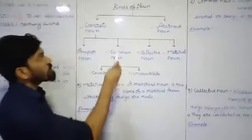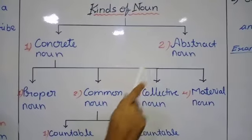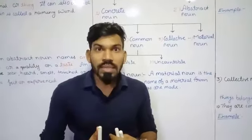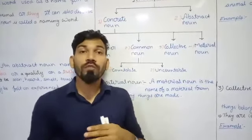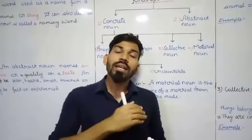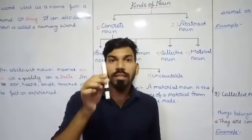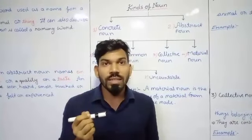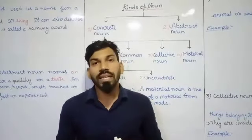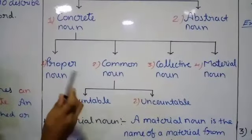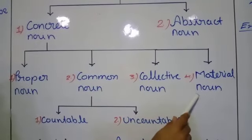Now let's move to the kinds of nouns. There are two main types of nouns: concrete noun and abstract noun. Whenever we are talking about a concrete noun, that means the noun what we can see, touch, feel, or taste — like this marker, I can see it, touch it, write by it. The concrete noun is further divided into four types: proper noun, common noun, collective noun, and material noun.